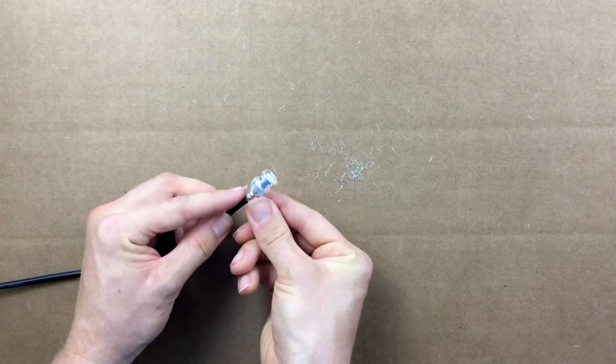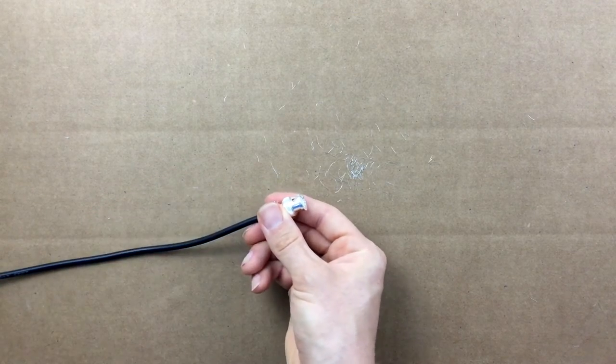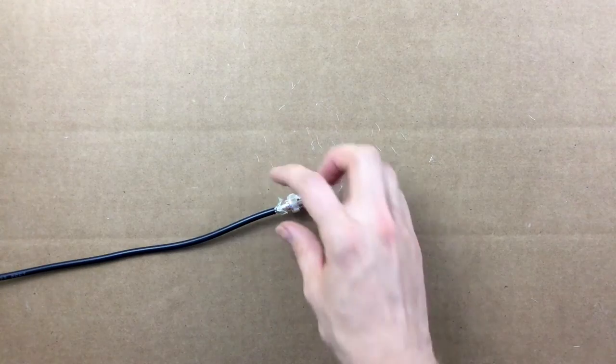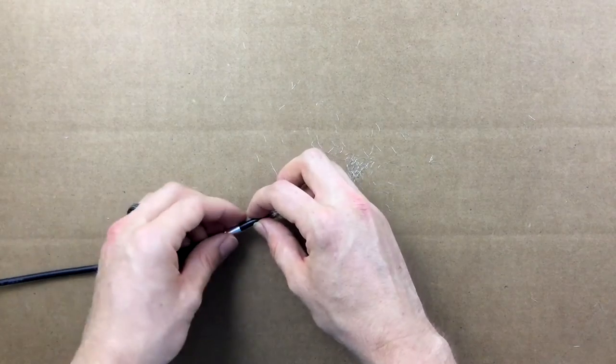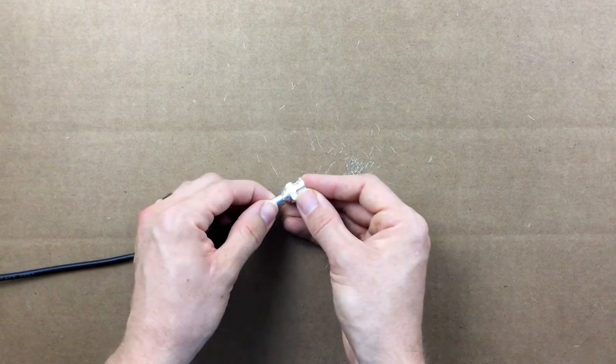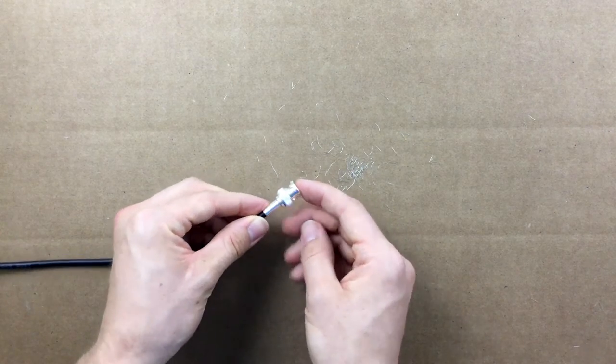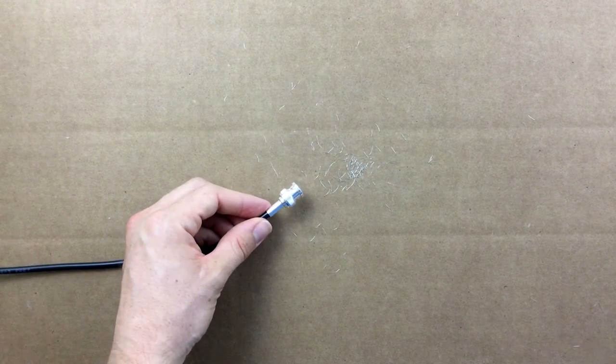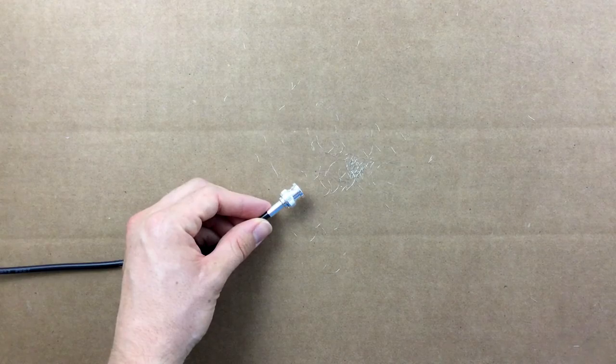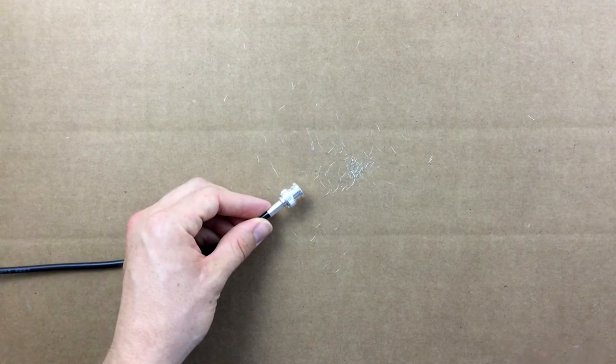When fully seated, bend down the strands over the rear portion of the connector body. Grab the ferrule we placed on the coax earlier and slide it up over the braid strands and the rear of the connector. Look at where the ferrule meets the connector body. If there are strands of the braid that are too long and extend out too far, trim them back with your cutters.